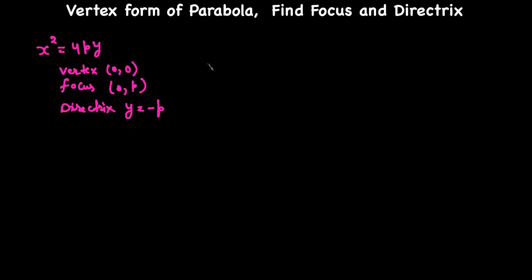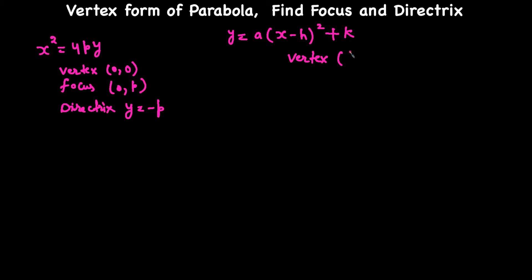In vertex form, the equation of a parabola can be written as Y = a(x - h)² + k. This is the equation in vertex form in terms of a, H, and K. The vertex of this parabola is at (H, K) — this value of H and K gives you the vertex of the parabola.